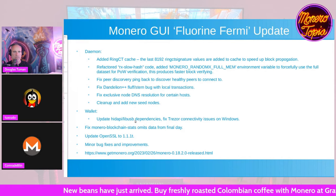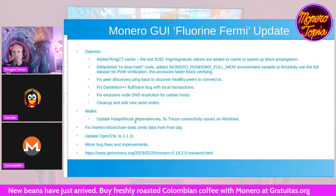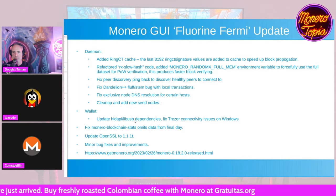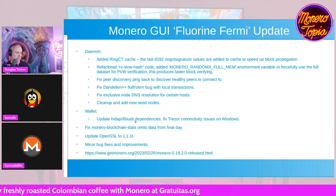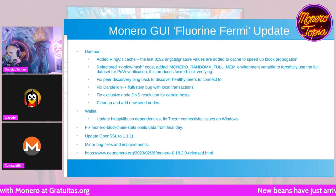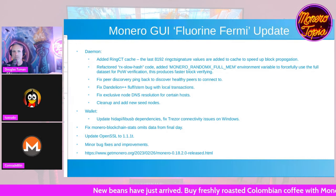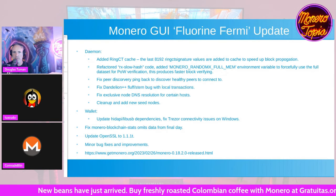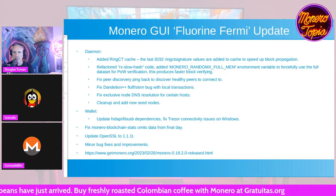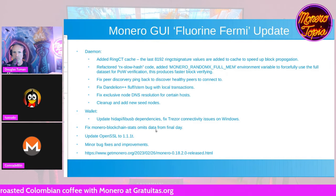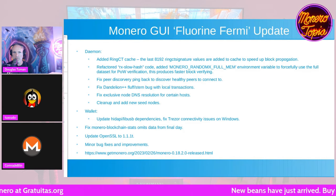There was a problem with Trezor connectivity issues on Windows 11 23H2, so they fixed those. They also updated to OpenSSL 1.1.1T, which brings some security updates. There are also some minor bug fixes which aren't specifically mentioned.